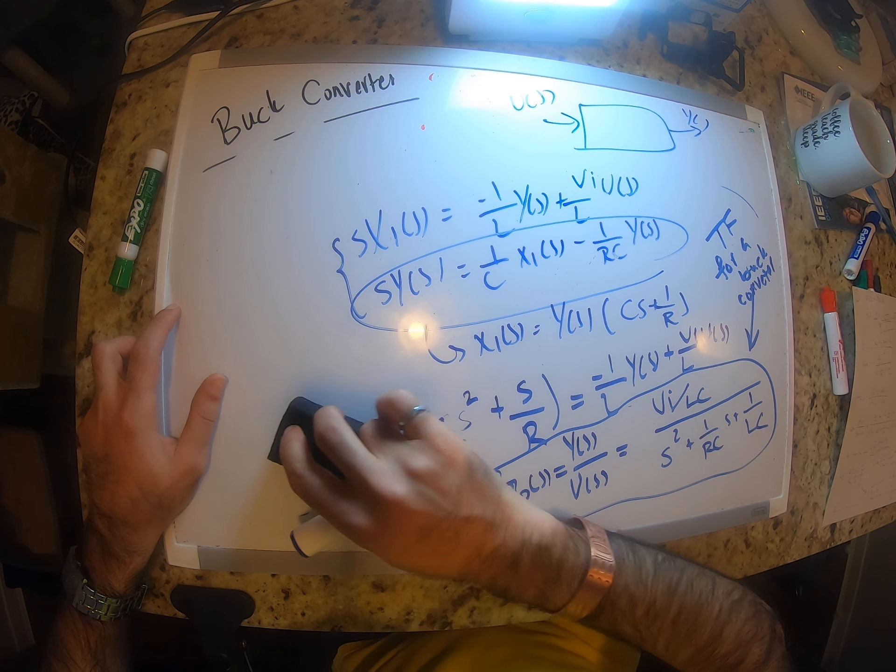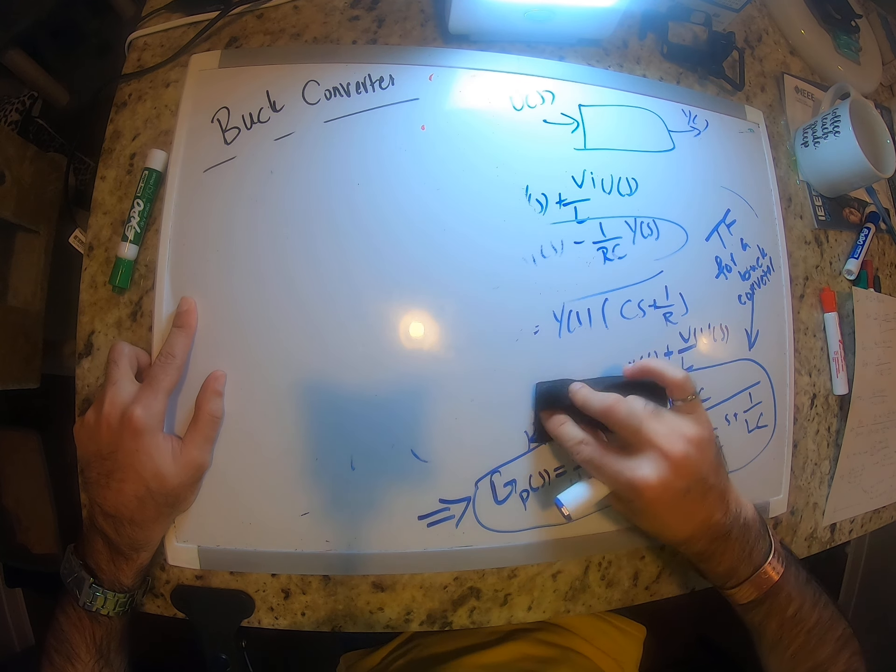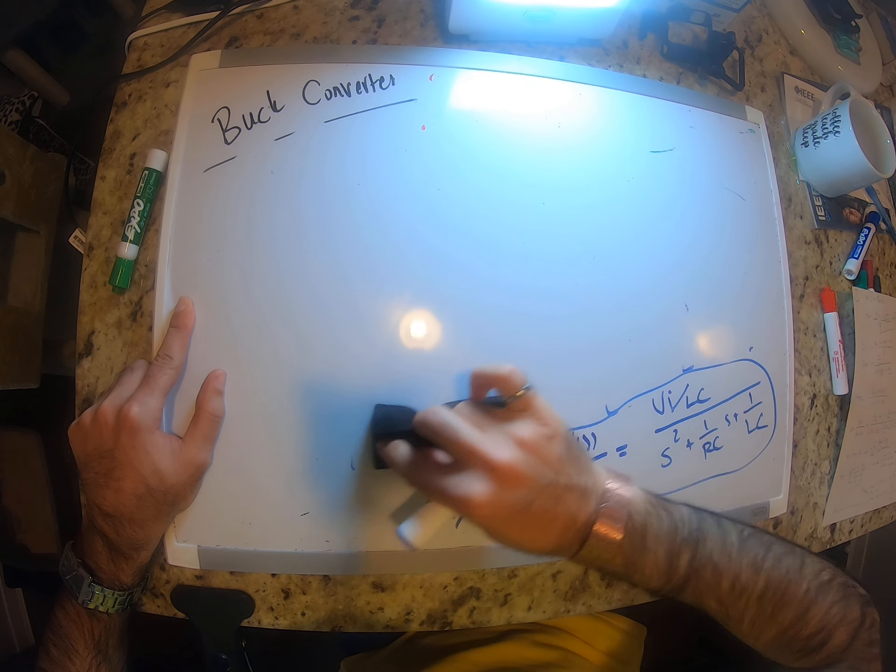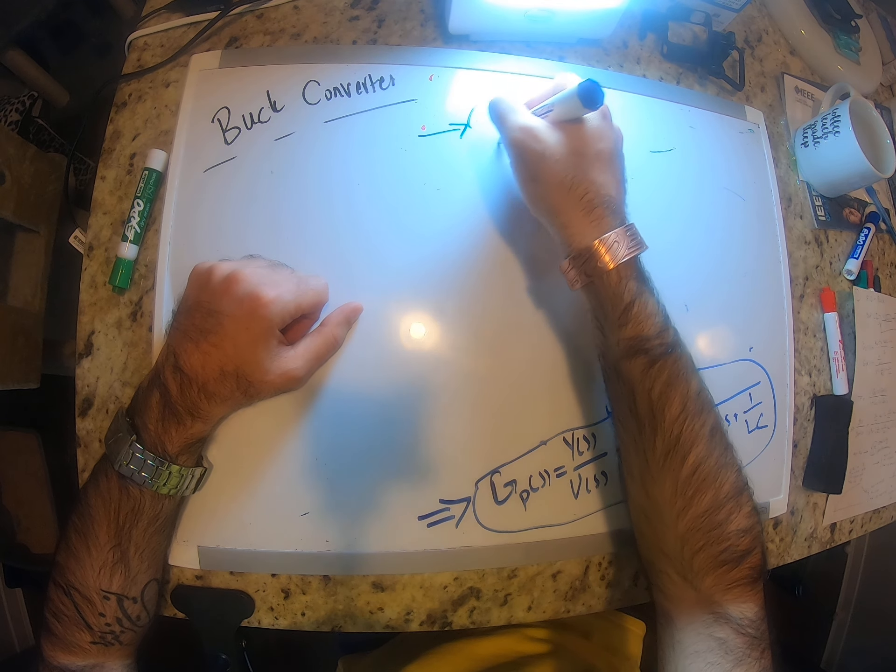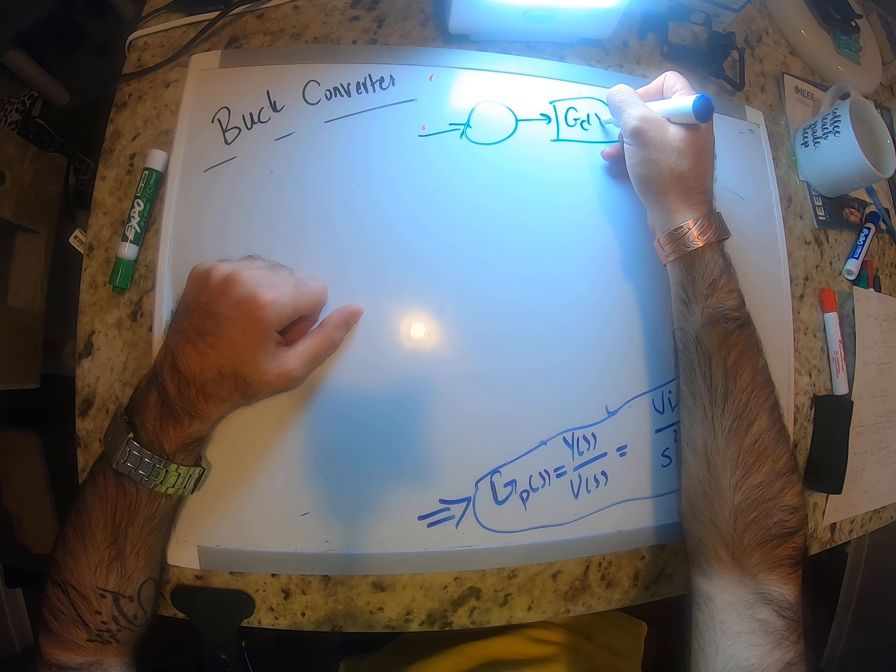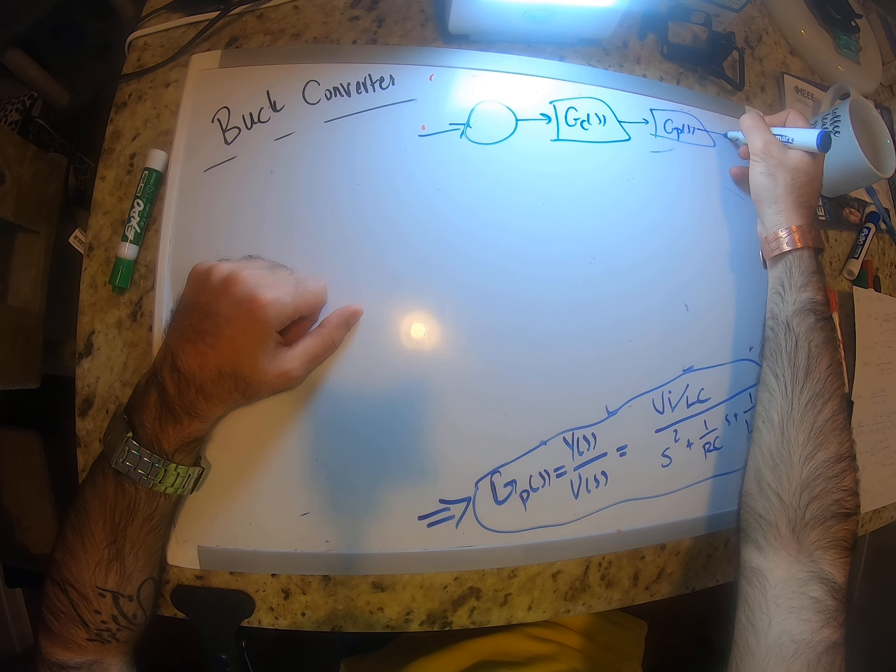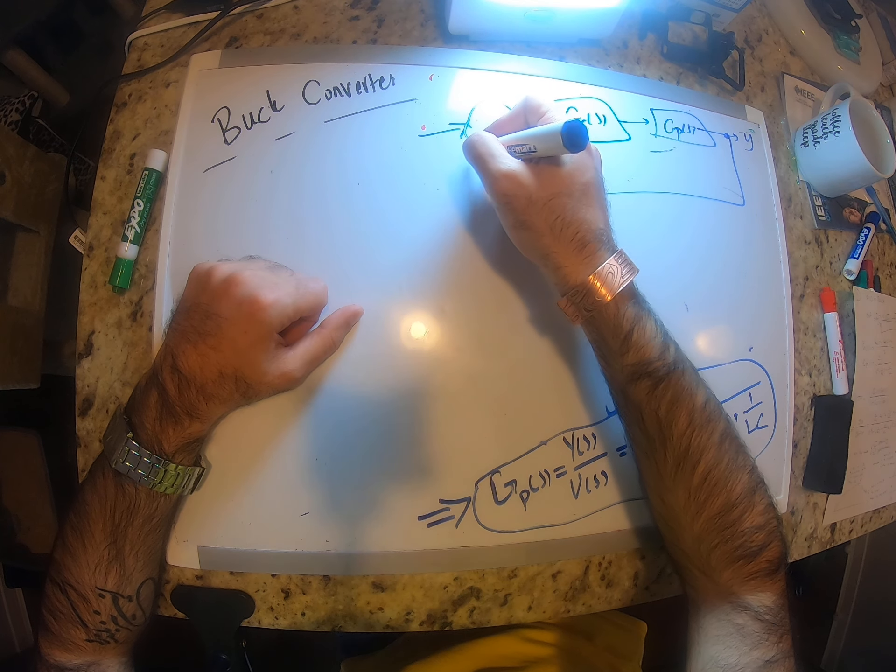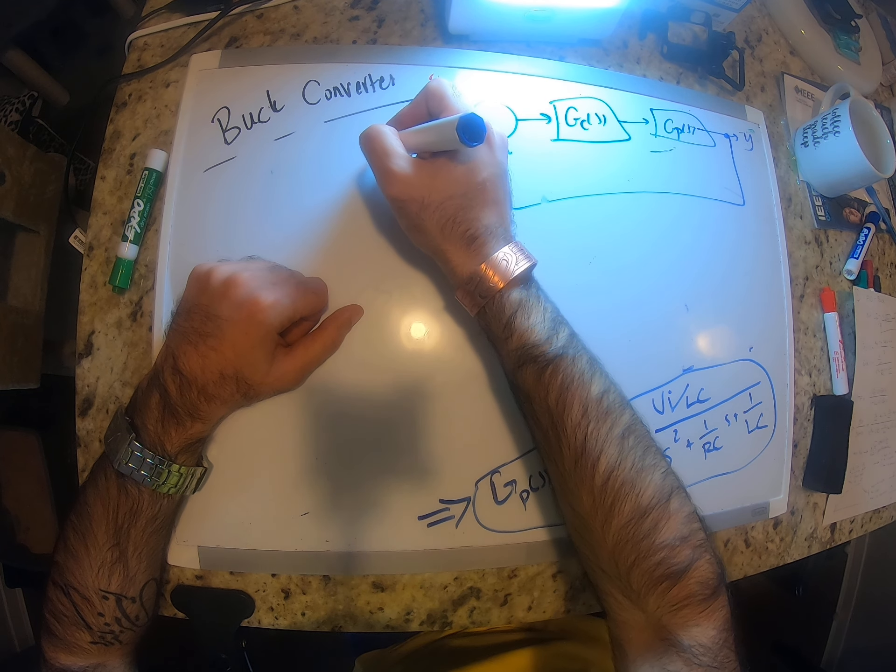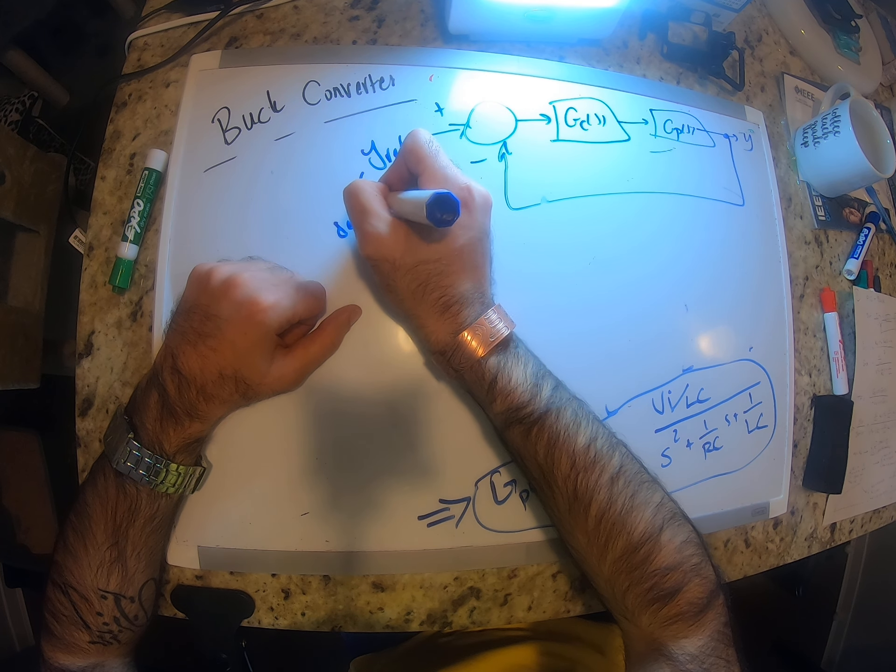Okay, now that we have this, we can basically see how we can design a control loop for it. Gc(s), this is Gp(s), this is y. It takes the measurement here, positive-negative, this is the y_ref which is our output desired output voltage.